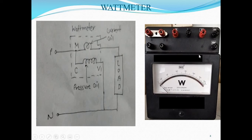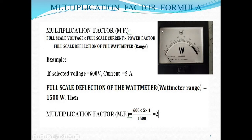When we do the connection, either we can use the 300 volt range or 600 volt range. Also, we can use this watt meter for different current ranges. So, according to the connection, how do we calculate the multiplication factor? Just keep in mind that this multiplication factor is mainly used to extend the range of the watt meter. So, what is the formula for calculation of the multiplication factor?